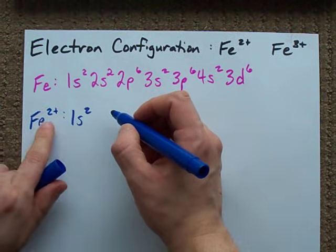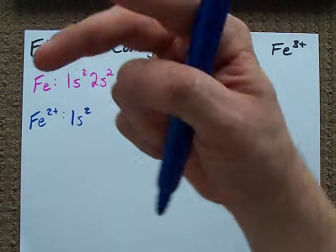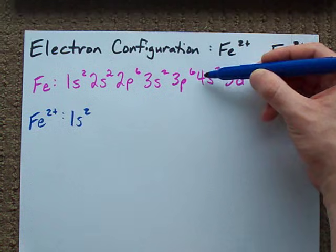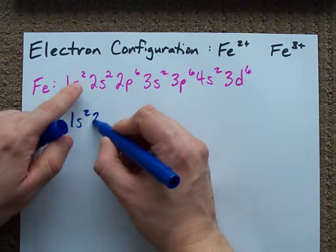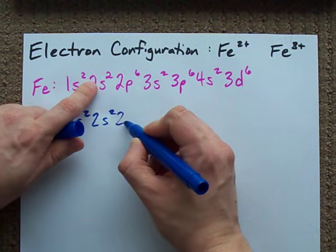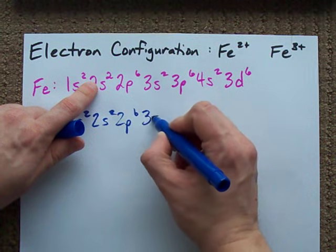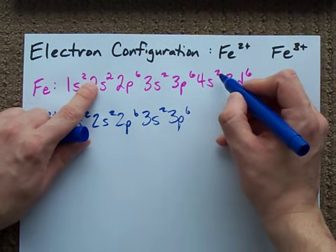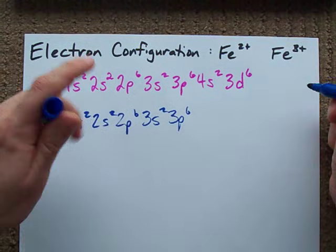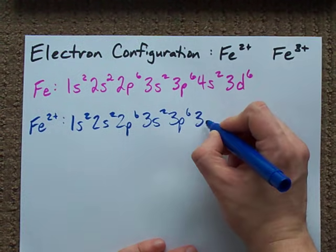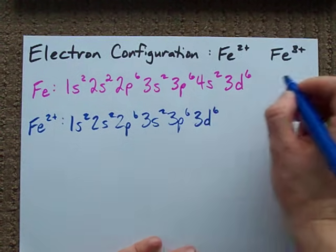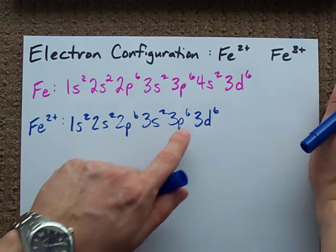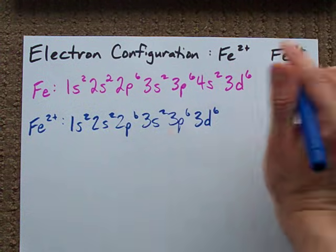So, the electron configuration for Fe2+, removing two electrons from the highest N orbital. Now, 1s2, 2s2, 2p6, 3s2, 3p6, 4s0 now so I'm not going to write anything, 3d6. This is the electron configuration for Fe2+. It's the same, but you remove two 4s electrons.